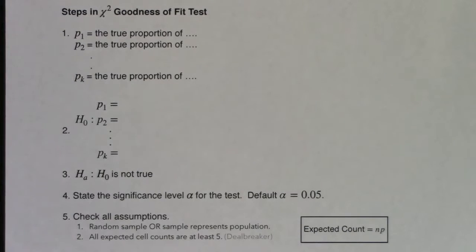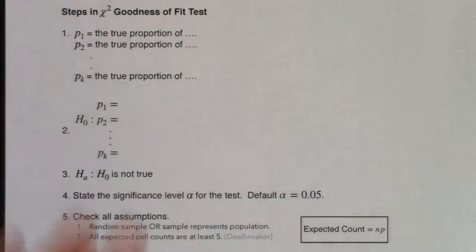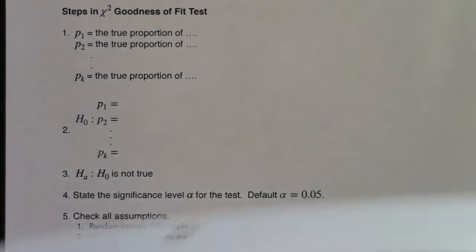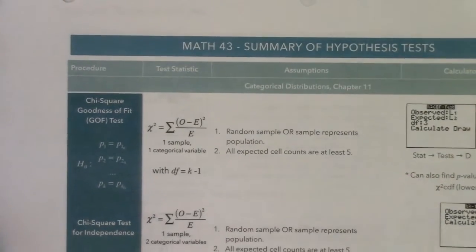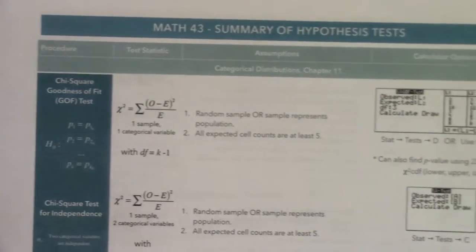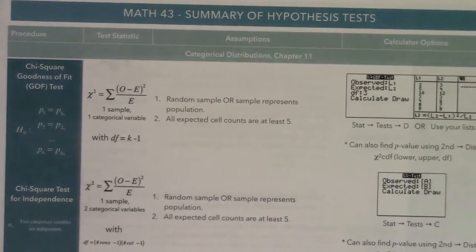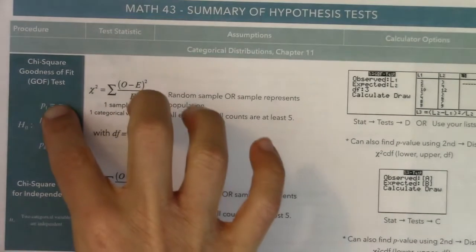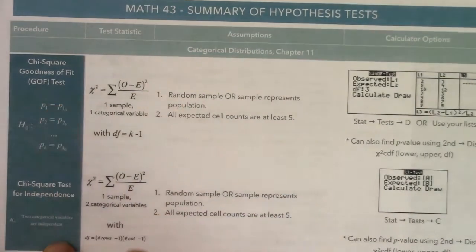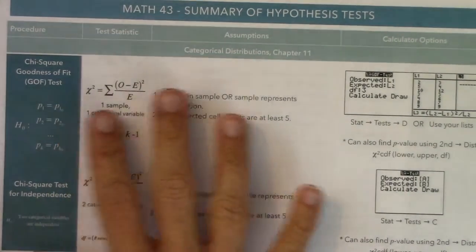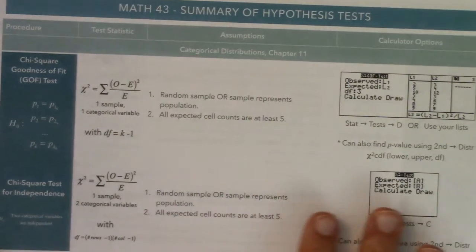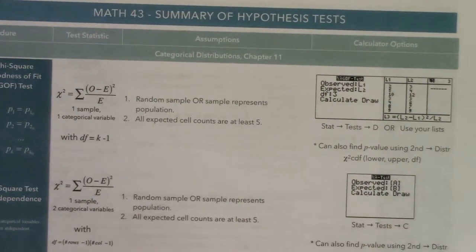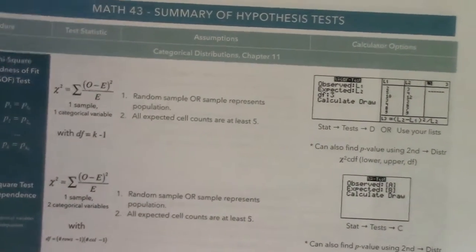We picked up two more hypothesis tests in Chapter 11: the goodness of fit test and the chi-squared test for independence. If you're still using that overall spreadsheet or flowchart of all your tests, you'll see them there, including all the assumptions and what you do with your calculator to get there. Keep that as a reference.